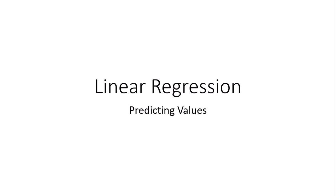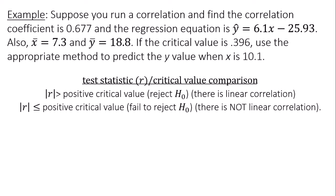Hello, this is a video about linear regression predicting values. Suppose you run a correlation and find the correlation coefficient is 0.677 and the regression equation is y-hat equals 6.1x minus 25.93.